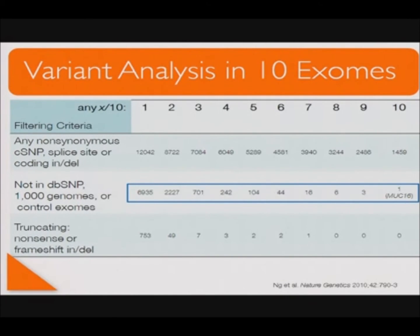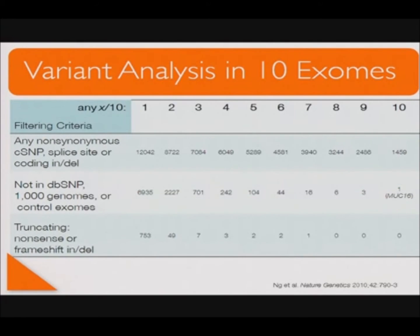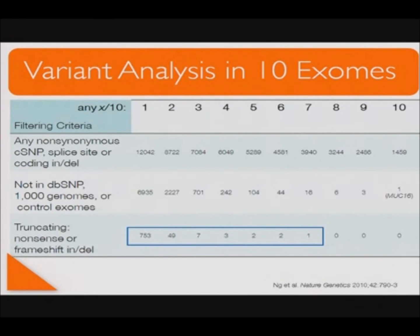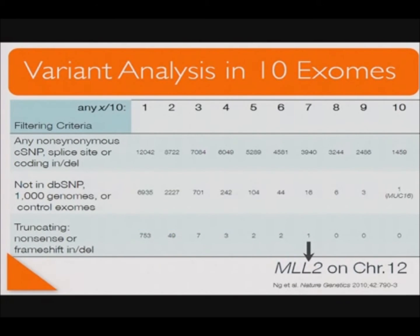We went back and tried several other functional annotations, including phenotype stratification. But as illustrated in the Nature Genetics manuscript published online in August, if we included only truncating variants — those causing a nonsense or frameshift insertion-deletion — we reduced our complexity to a single candidate gene. Of the 10 exomes, 7 were found to have a loss-of-function mutation in only one gene, MLL2 on chromosome 12. Two additional individuals were later found to have insertion or deletion variants by conventional Sanger dideoxy sequencing — false negatives by exome sequencing.